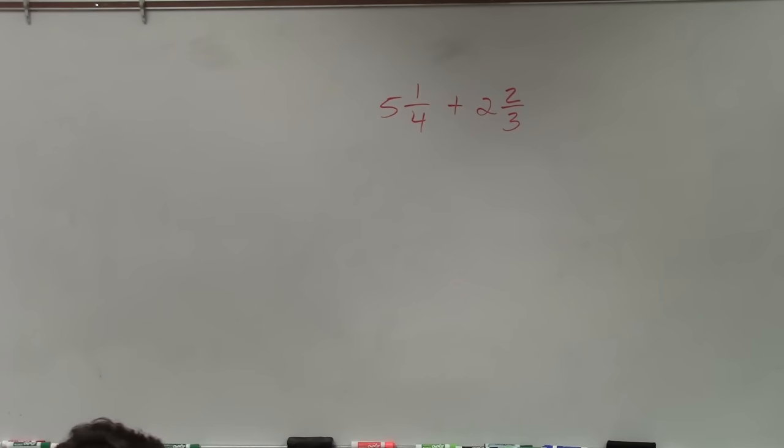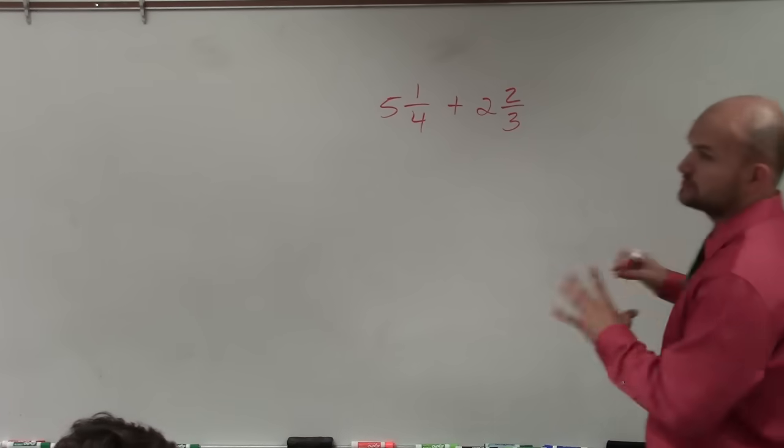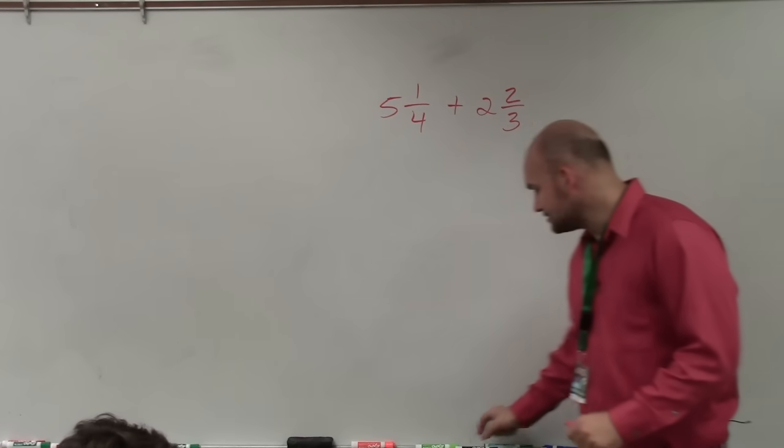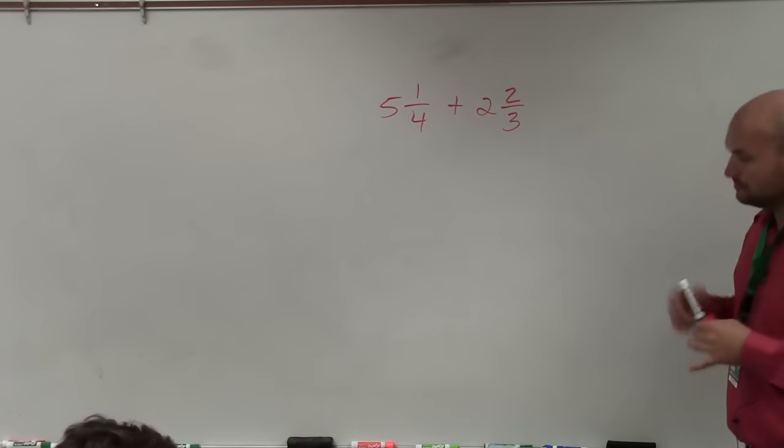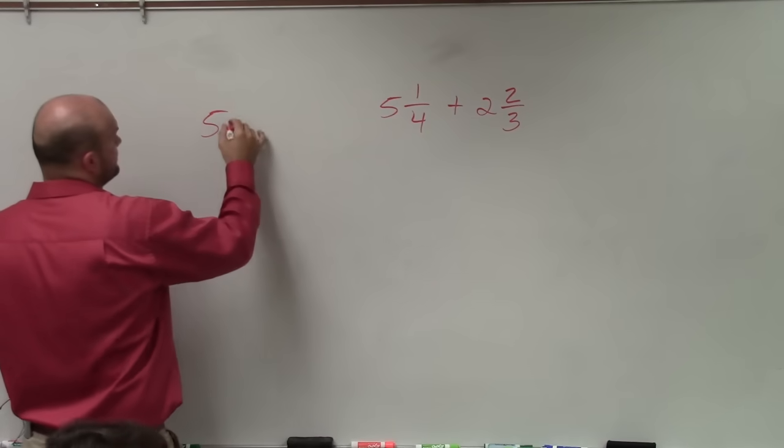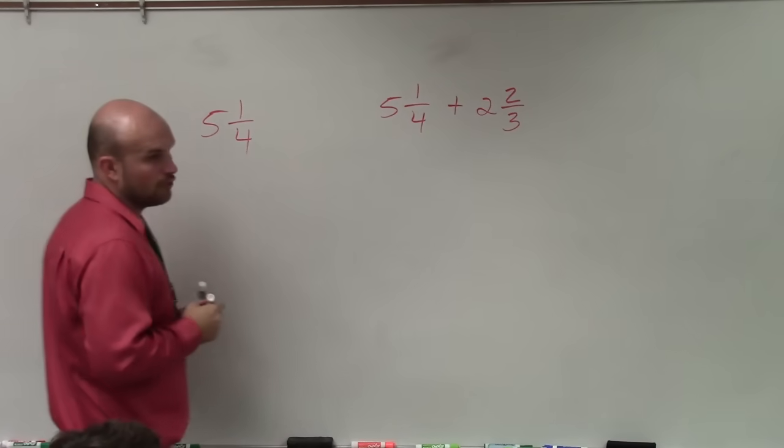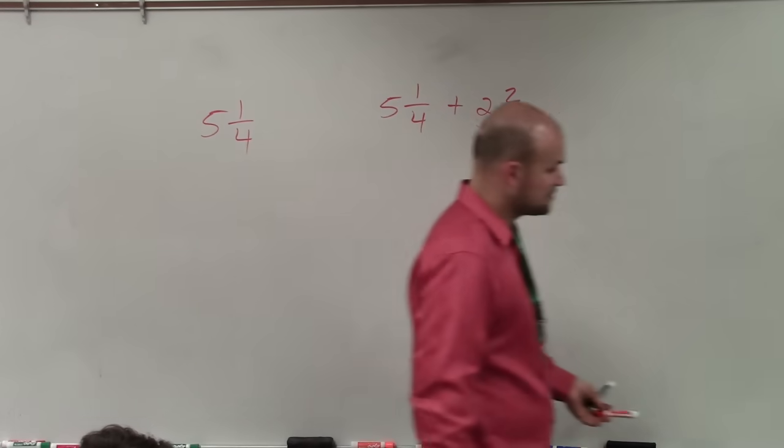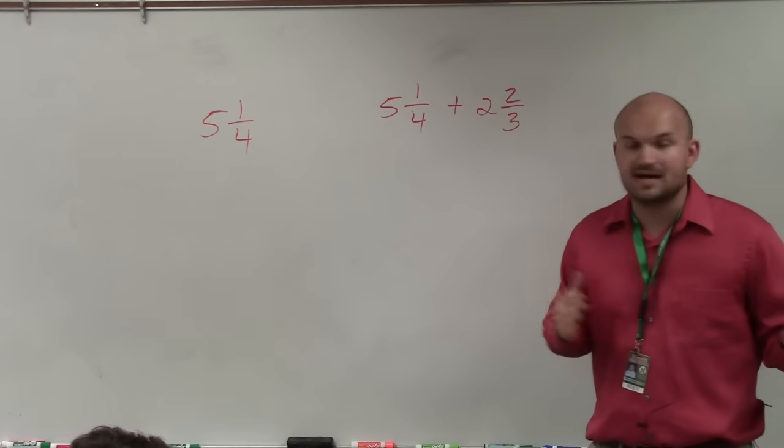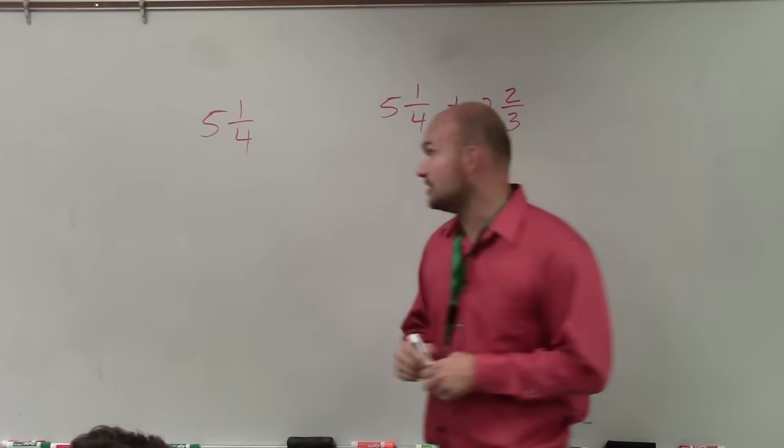All right, so when adding two mixed numbers, the main important thing, though, whenever we're adding mixed numbers, we always want to convert them back over to improper fractions. And to do that, there is a kind of step-by-step process that I want to make sure you guys are all aware of. Because we're going to be using this over and over again, you guys are going to see mixed numbers quite a bit. So we want to make sure we can always compute mixed numbers as an improper fraction so we can apply our operations.